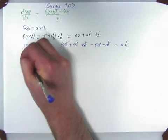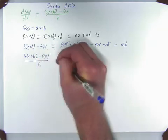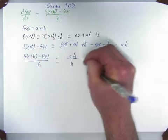So if we take f of x plus h minus f of x and we divide it by h, that equals to a times h divided by h, which equals to a.